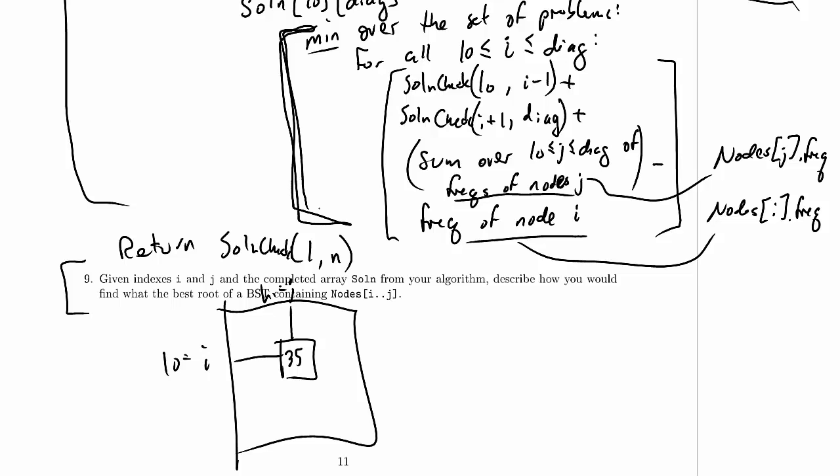Maybe a better way to do that would be to make our solution array a somewhat richer array. So instead of just storing the cost, it can also store which node it is that produces that cost. And then in constant time, we're able to figure out what node is the root and then recurse into the two subproblems that we create and figure out what nodes should be roots in those.